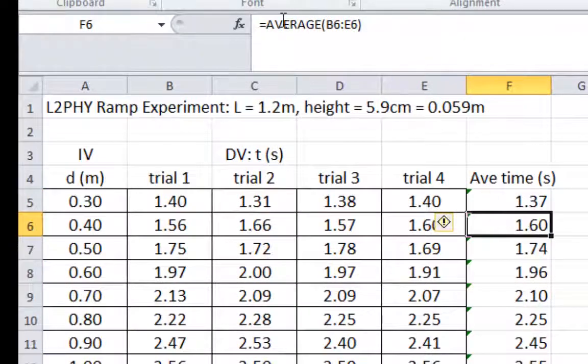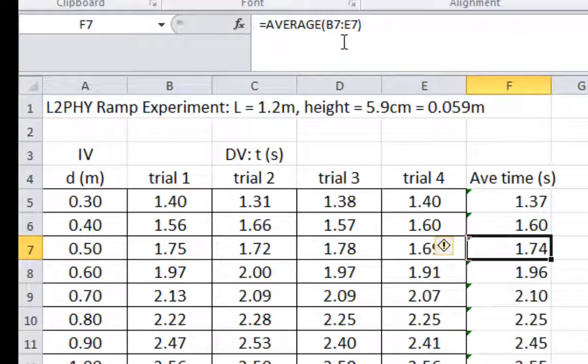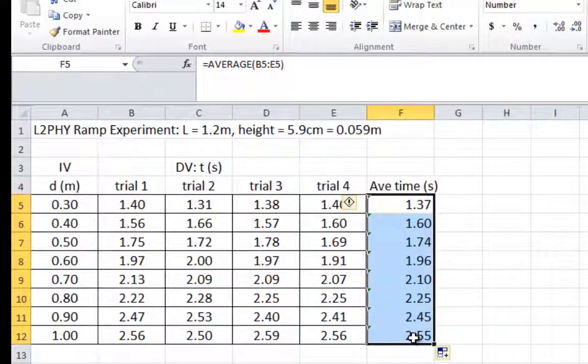it does all the others for you. If you click, you can see the equation it's using up here, where it's now doing everything in row 6. This one is doing everything in row 7. Now we have our averages.